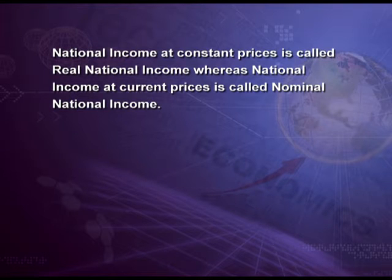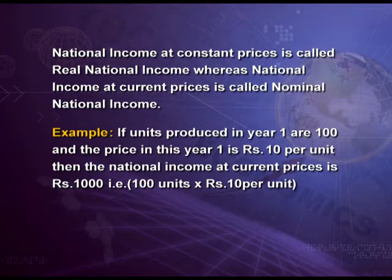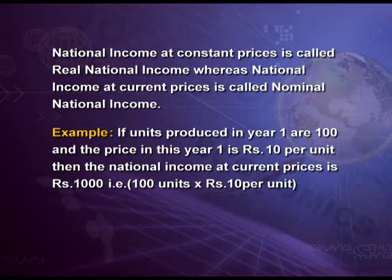National income at constant prices is known as real national income, whereas national income at current prices is known as nominal national income. To understand why, let us take an example. Suppose units produced in a year are 100 and the price in year 1 is rupees 10 per unit. Then the national income at current price will be 100 units multiplied by rupees 10, which equals rupees 1000.